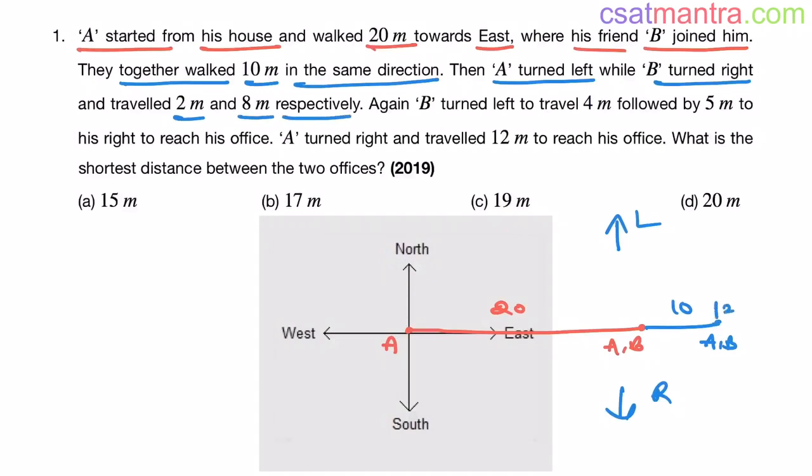A traveled 2 meters and B traveled 8 meters. These lengths are not to scale. Just have the sense of direction. Now A is here, B is here.